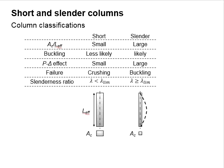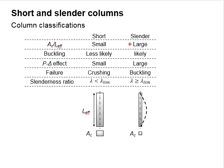The column can be classified into two types: short column and slender column. The short columns normally have a small cross-sectional area relative to its effective length. As for the slender column, the cross-sectional area is relatively small in comparison to its effective span.